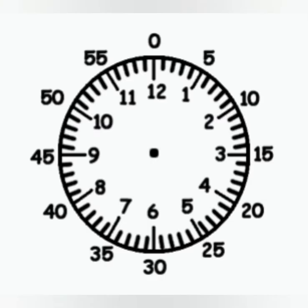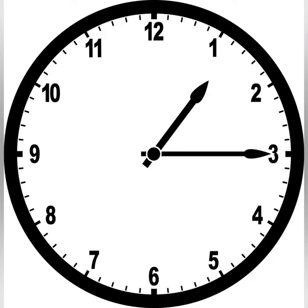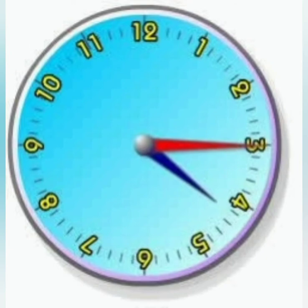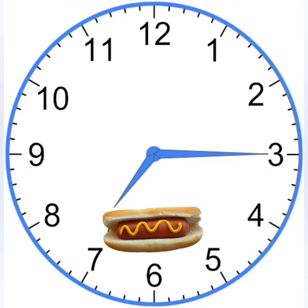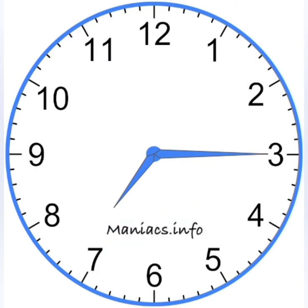You can also say it in numbers — it is one fifteen. Now let us move to the next one. Here the minute hand is pointing to three and the hour hand is pointing to four. It means that is four fifteen, or quarter past four. This is quarter past seven, or seven fifteen.